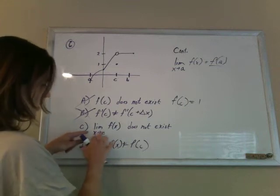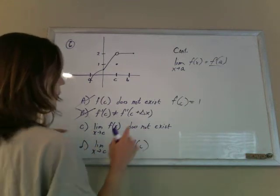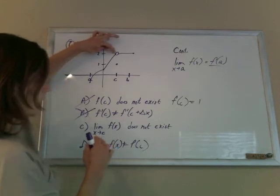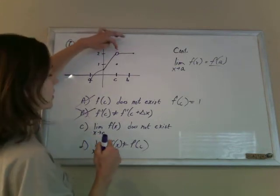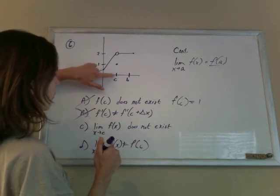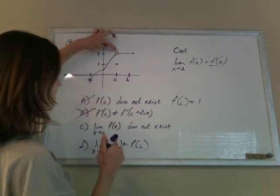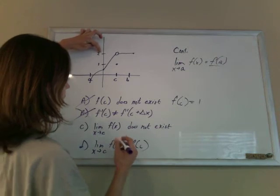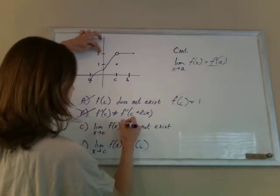For C, they say the limit doesn't exist. But the limit does exist. The limit is what the function is trying to equal, what the function approaches when x is going to c. You can see that the function is trying to equal 2. So no, it exists, and it equals 2.